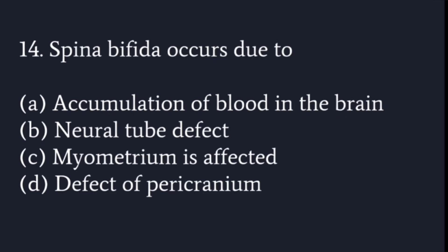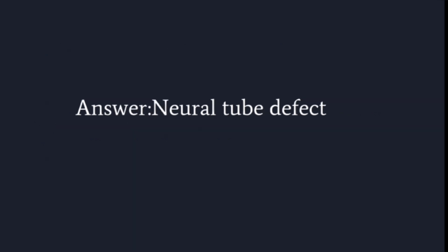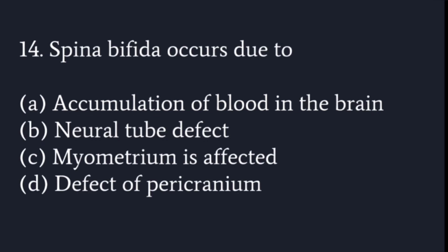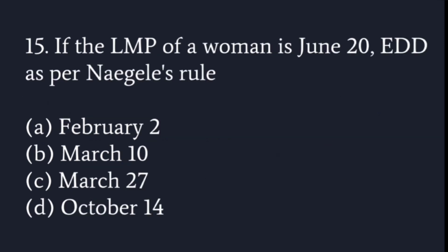Spina bifida occurs due to: accumulation of blood in the brain, neural tube defects, myometrium being affected, or defect in the pericranium? The answer is neural tube defects. These are midline congenital anomalies and spina bifida is due to neural tube defects.